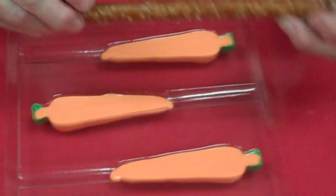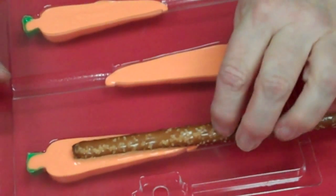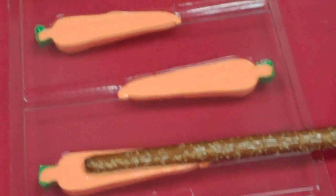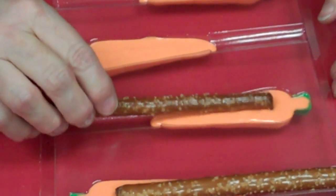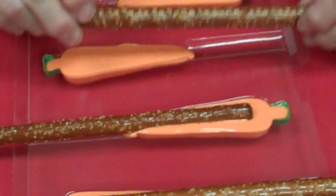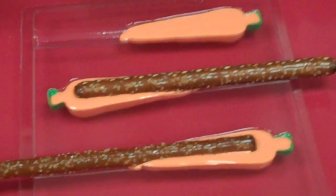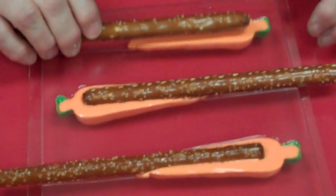Then we take our pretzel rods again, place that right into the mold. Just like that. And like that. And right down in there. And here goes the last one.